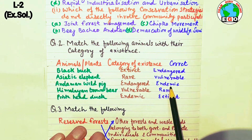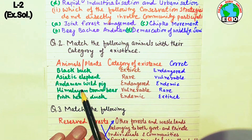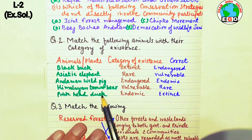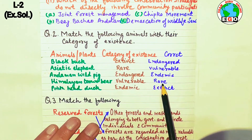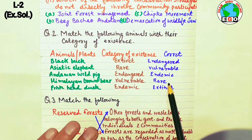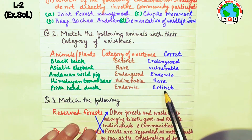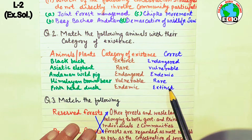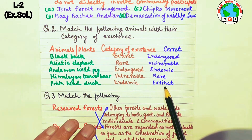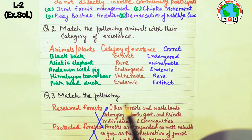Himalayan brown bear — rare, meaning its population is very limited. Pink-headed duck — extinct, meaning it has already disappeared completely.